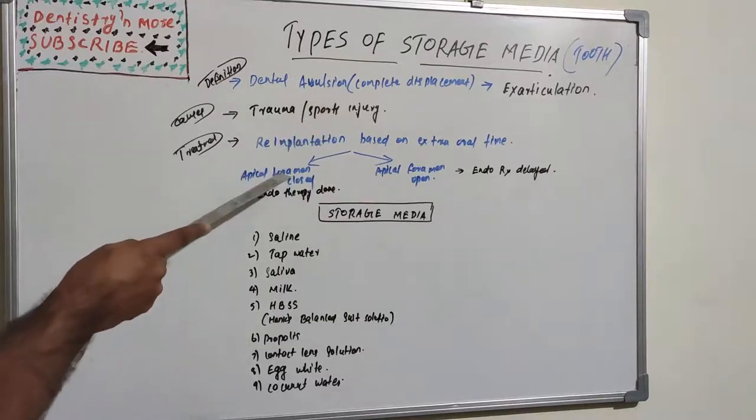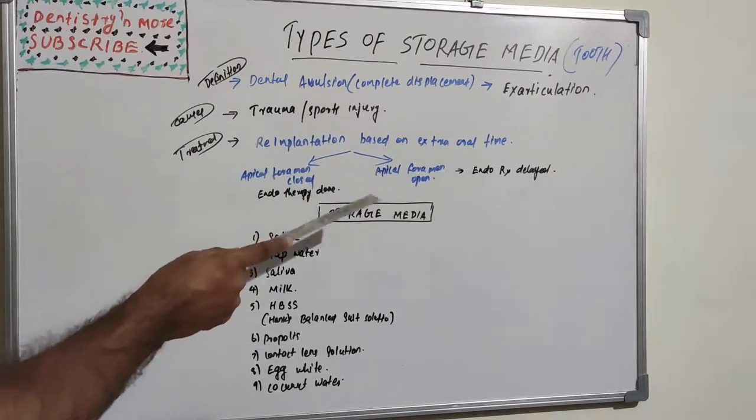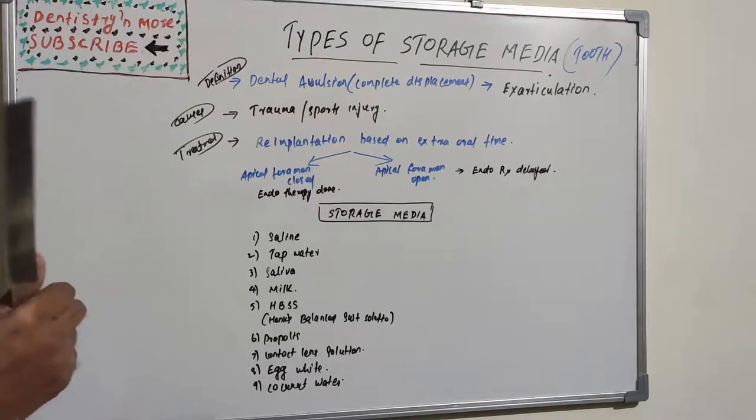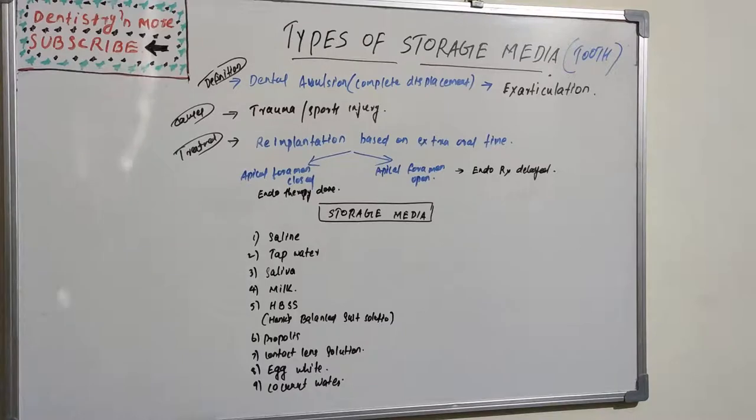Today's topic is not about the treatment. Today's topic is about storage media - how we are going to store the tooth until it gets re-implanted. We need to re-implant the tooth back to its socket. Till that time we need to store the tooth in an appropriate media. Otherwise the cell viability, the periodontal cell which is attached to the root, will die and will not be useful for further re-implantation. We need to maintain the cell viability.